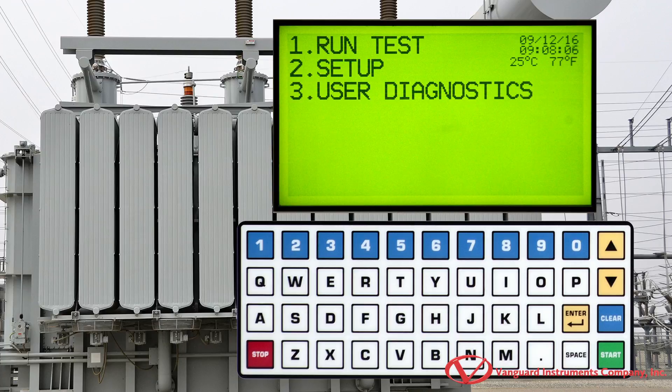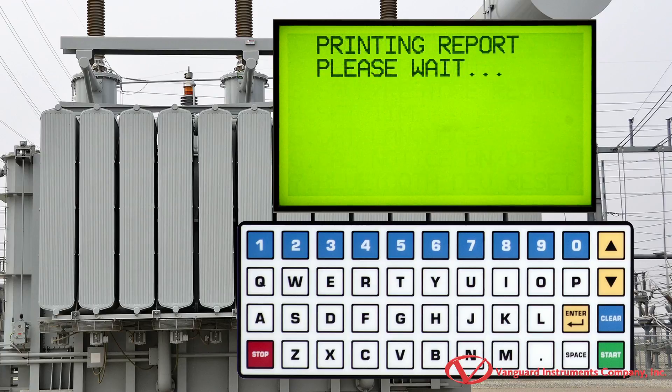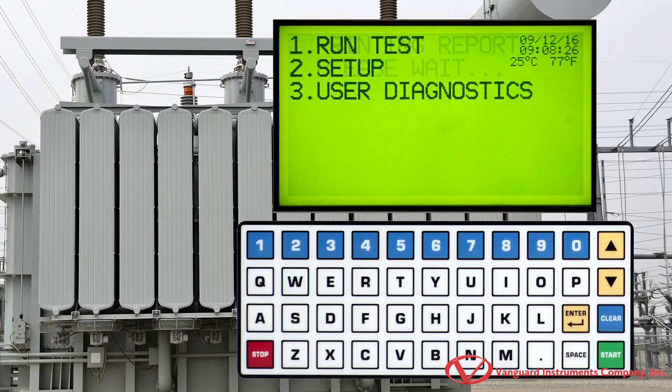Now let's print the test results by pressing the 2 key for the setup menu. Press the 2 key to print the record that's in the unit's working memory. The test report will be printed on the unit's built-in thermal printer and we will then be returned to the main menu.